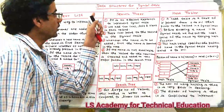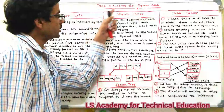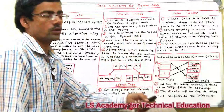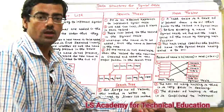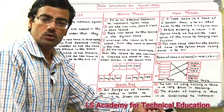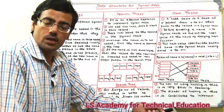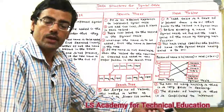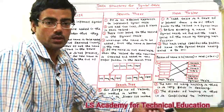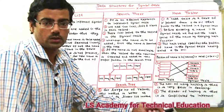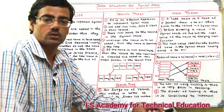So I hope the various data structures for the symbol table — linear list, search tree, and hash table — are clear to you. If you have any doubt, you can ask in the comment section. Thank you so much.